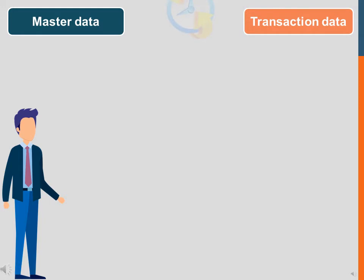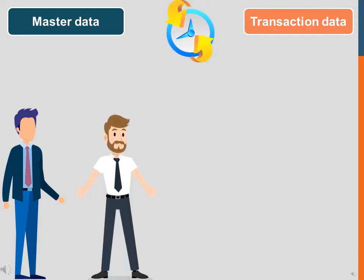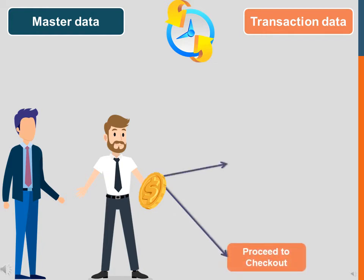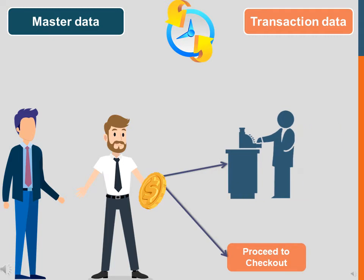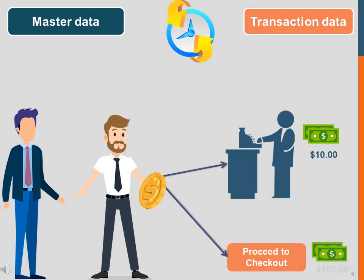Another way of distinguishing master data from transaction data is how often that data is changing. Master data must be consistent whether you are checking out at the cash register or at the company's website. Transaction data, on the other hand, is changing every time you buy something from the store — one day you can spend $10 and on the second day you can spend $100. This is known as volatility.